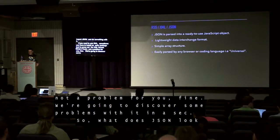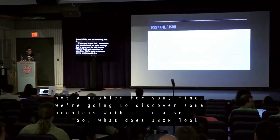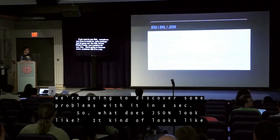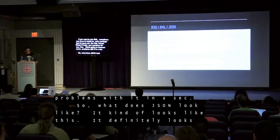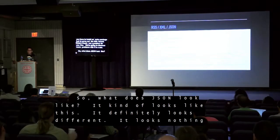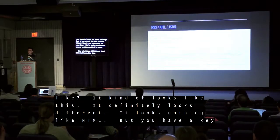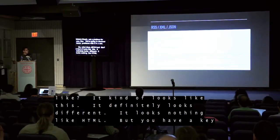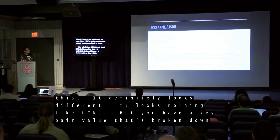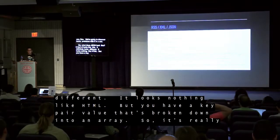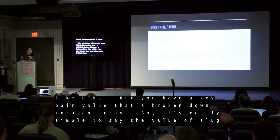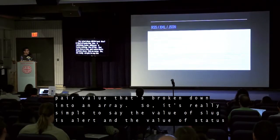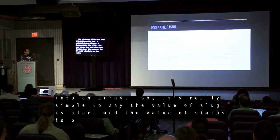So what does JSON look like? It definitely looks different — nothing like HTML. You have key-value pairs broken down into an array. It's really simple to say the value of slug is 'alert' and the value of status is 'publish.'